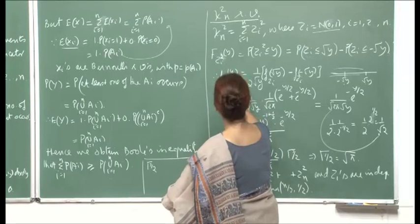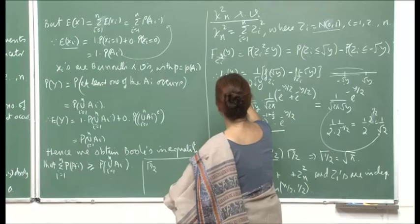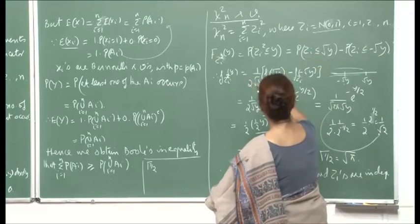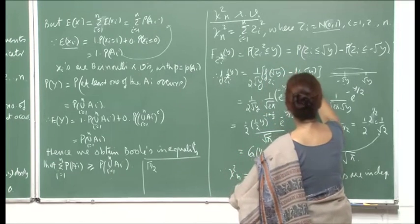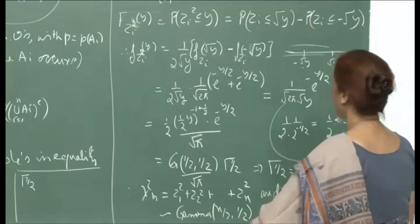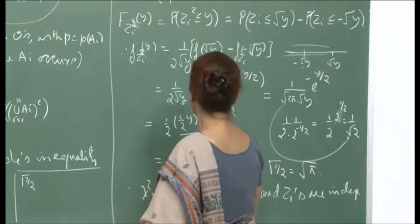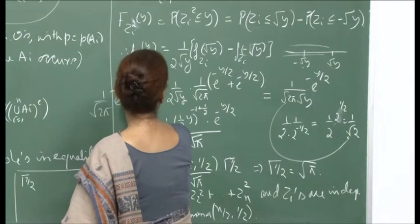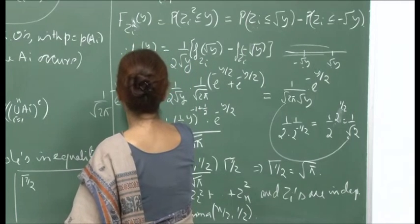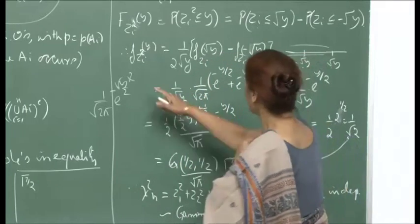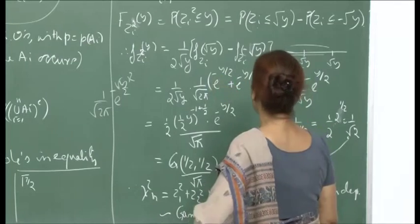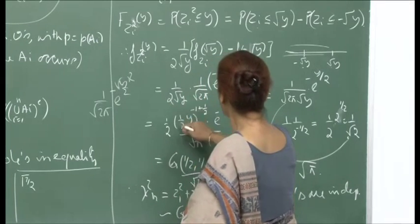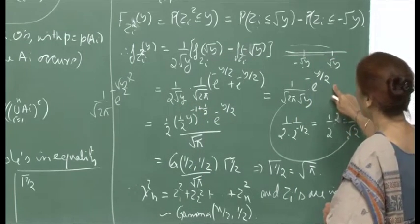For a standard normal, f(z) = (1/√(2π)) e^(-z²/2). Substituting √y gives e^(-y/2), and both √y and -√y yield the same value e^(-y/2). The factor of 2 cancels with the factor from the derivative, leaving the PDF of Zi² as (1/√y) · e^(-y/2) · (1/√(2π)), which simplifies to (1/√2) · y^(-1/2) · e^(-y/2).